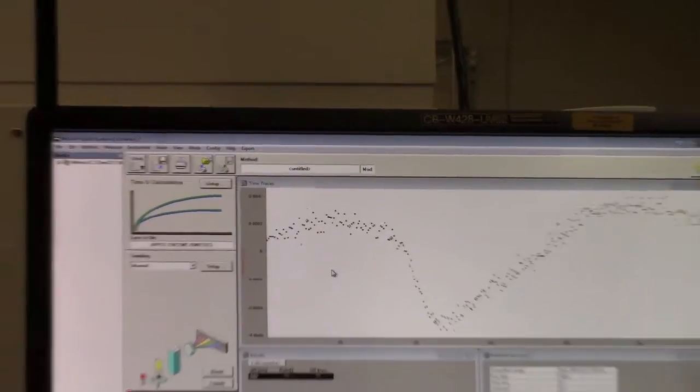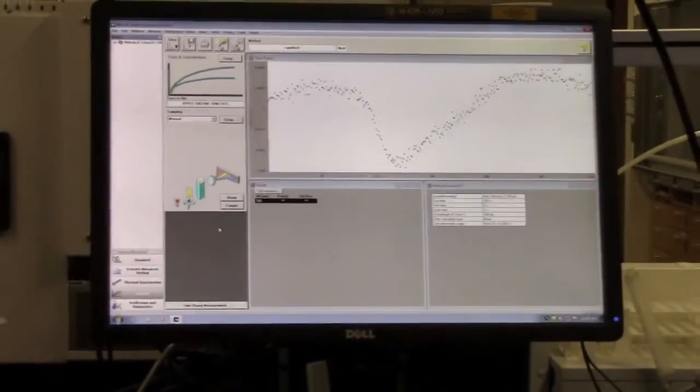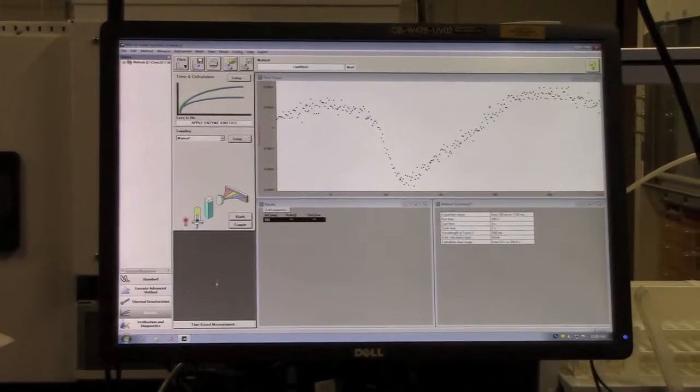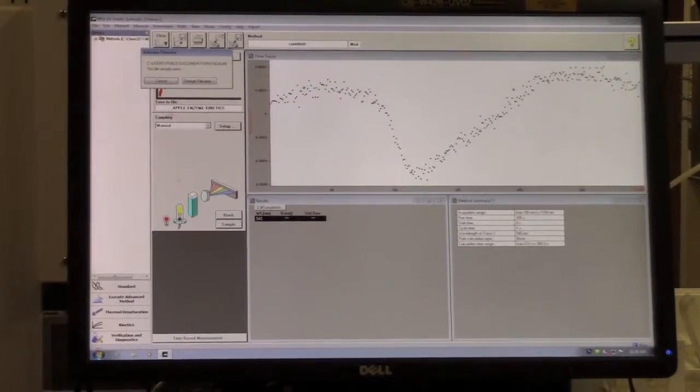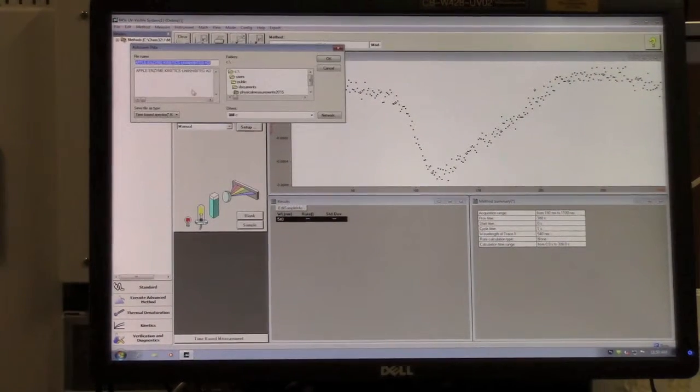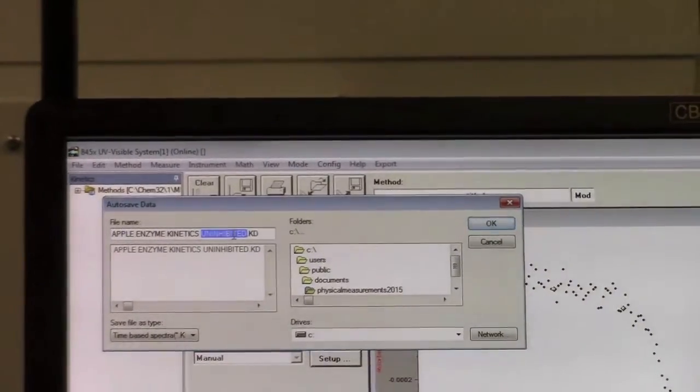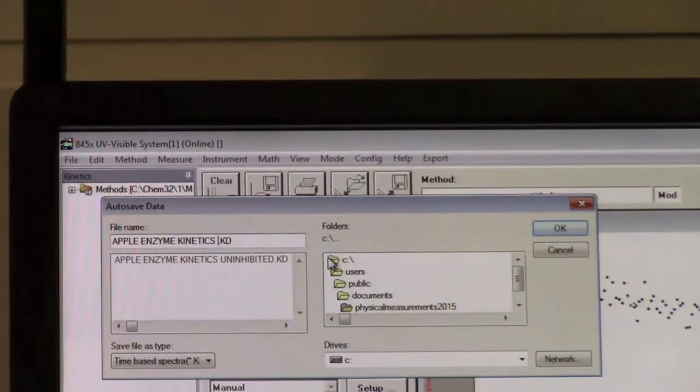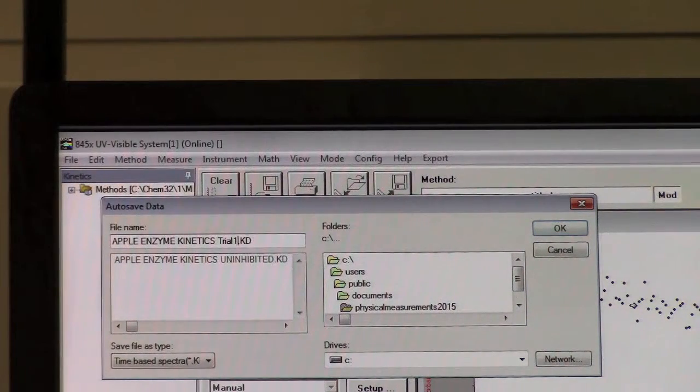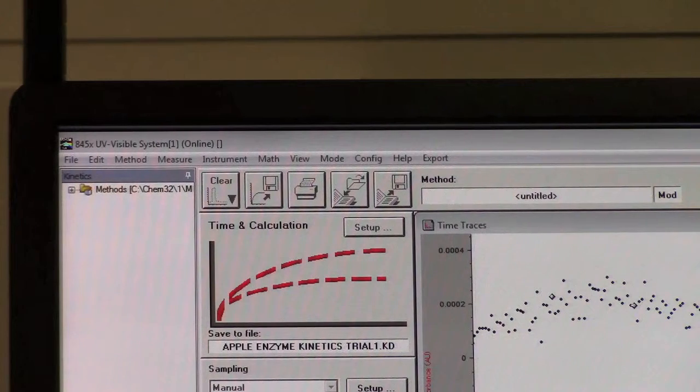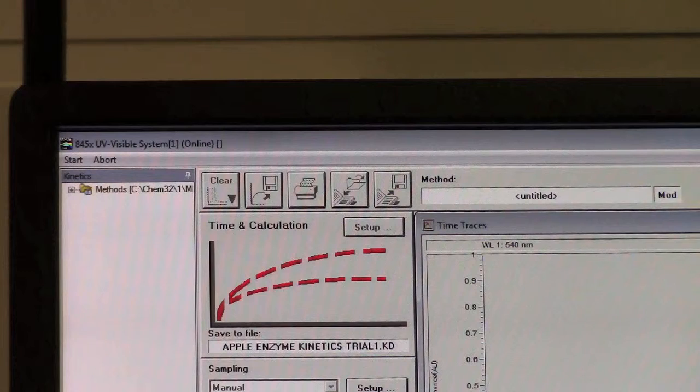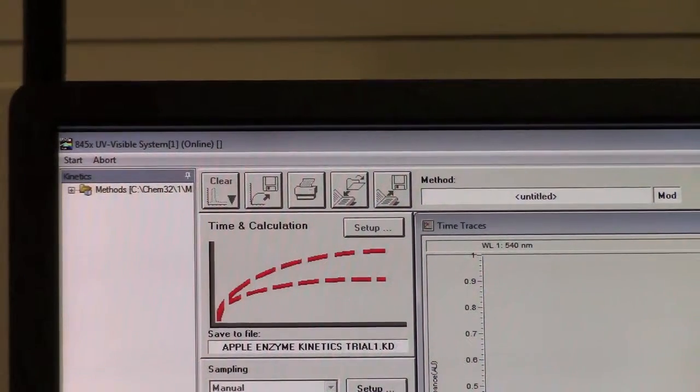To take the next measurement, once you have reset your cuvette, click on Time-Based Measurement again. Click Change File Name and name it descriptively for the particular trial you are doing. For example, you might name it Trial One. You'll be prompted again that the shutter will remain open the entire time; click OK. Once you've added the enzyme to initiate the reaction, click Start and the process will repeat.